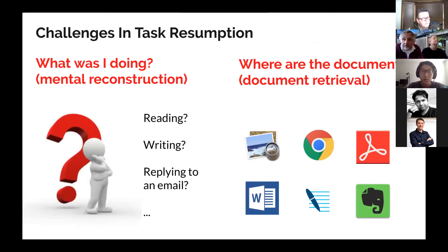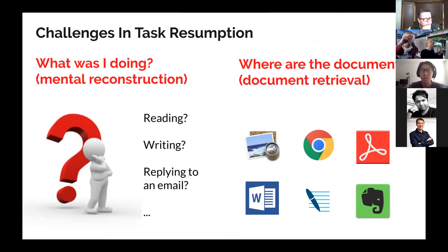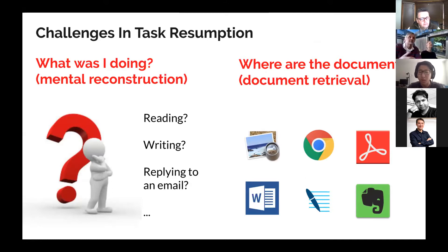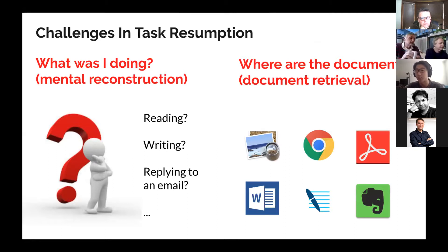There are two different challenges in the task resumption procedure. First, I need to remember what I was doing in the past — was I reading, writing, or replying to an important email? The second challenge is: where is the document I was working on? Because there are so many applications that we use on our work computers, and there are also many documents for each application.